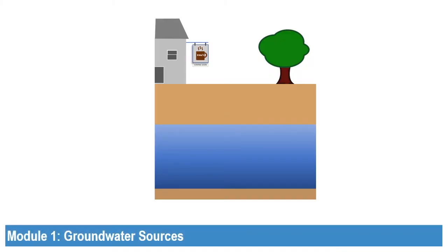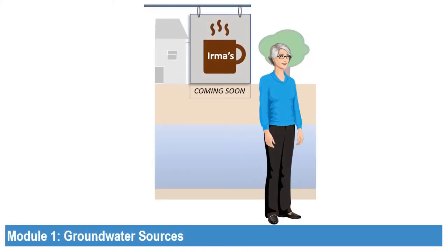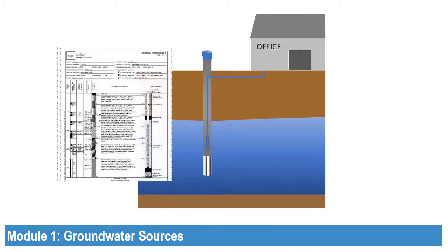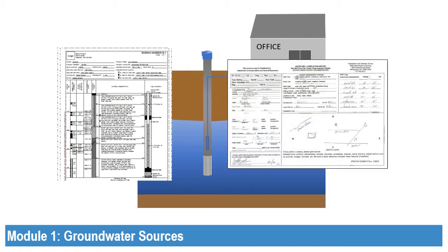First, you need a water source to conduct business but you do not have a water supply well currently available. Secondly, you have an existing well with the required documentation, which includes a well log that was created by the well driller when the well was originally constructed, or the water well completion report.